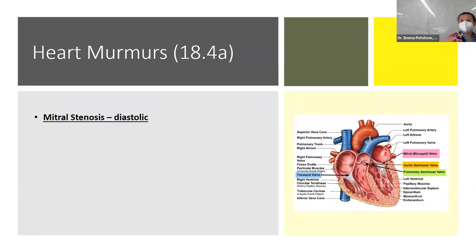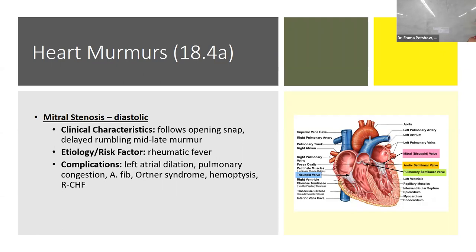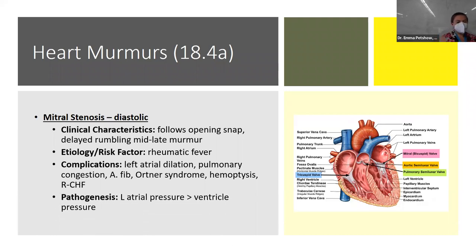For mitral stenosis — a diastolic murmur — there's an opening snap followed by a delayed, rumbling, mid-to-late murmur. The main etiology is rheumatic fever. Complications include left atrial dilatation, pulmonary congestion, atrial fibrillation, hemoptysis, and right-sided CHF. Left atrial pressure is greater than ventricular pressure, making it harder for the valve to open.